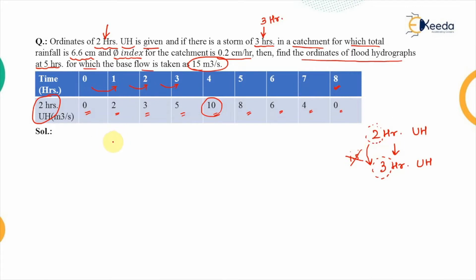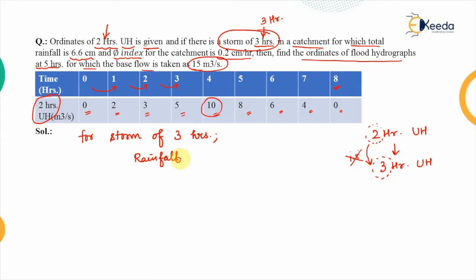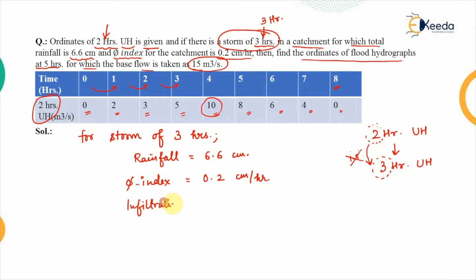Now we write down the data corresponding to the three-hour storm. The total rainfall that has occurred is 6.6 cm. The phi index is 0.2 cm per hour, which represents the infiltration loss per hour. Therefore the total infiltration loss over the three-hour storm duration equals 0.2 multiplied by 3, giving 0.6 centimeters.